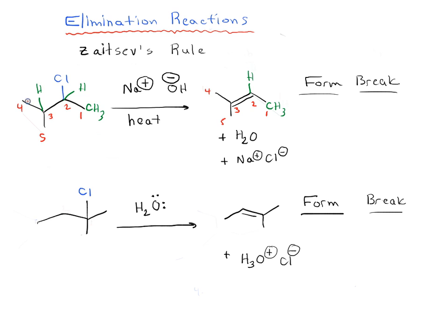What's different about our starting material versus our product is carbon 2 to chlorine has broken. So we've broken carbon 2 to chlorine, and we've also formed a new pi bond between carbon 2 and carbon 3. So carbon 2 to carbon 3 pi.